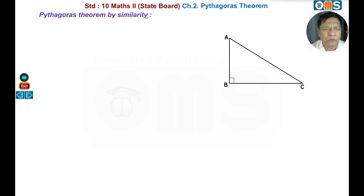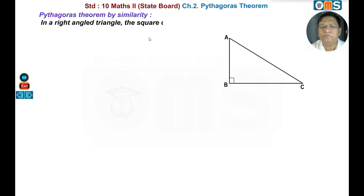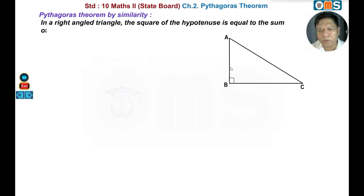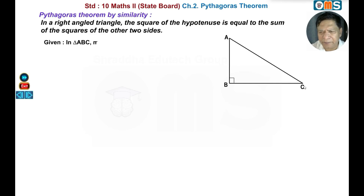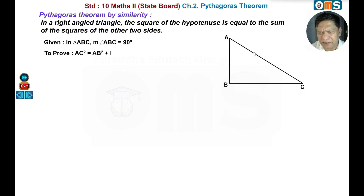Welcome to Online Math School. Pythagoras theorem by similarity in right-angle triangle: the square of the hypotenuse is equal to the sum of squares of the other two sides. In triangle ABC, angle ABC is 90 degrees. Given: to prove AC square is equal to AB square plus BC square.